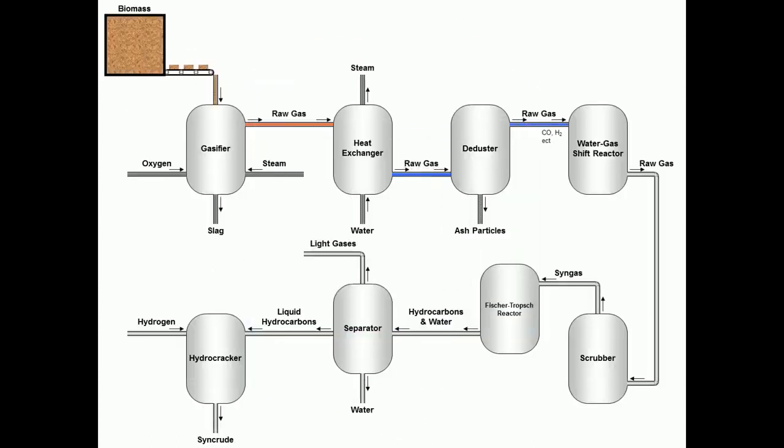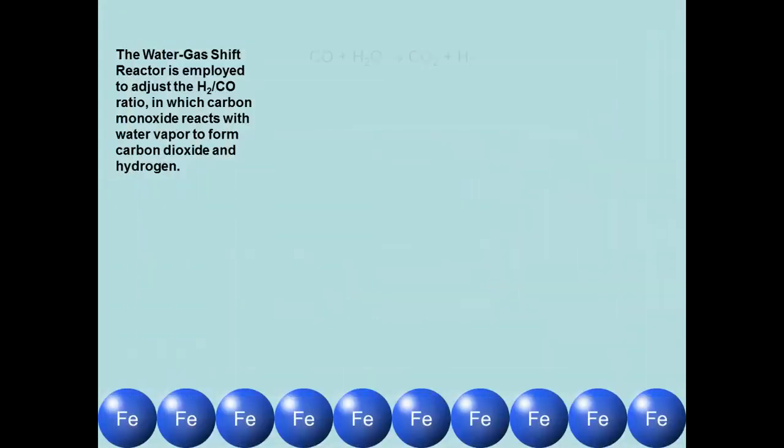After de-dusting, the raw gas is sent to a water gas shift reactor. The water gas shift reactor is an equipment for adjusting the ratio of hydrogen to carbon monoxide. In the reactor, carbon monoxide reacts with water vapor to form carbon dioxide and hydrogen.